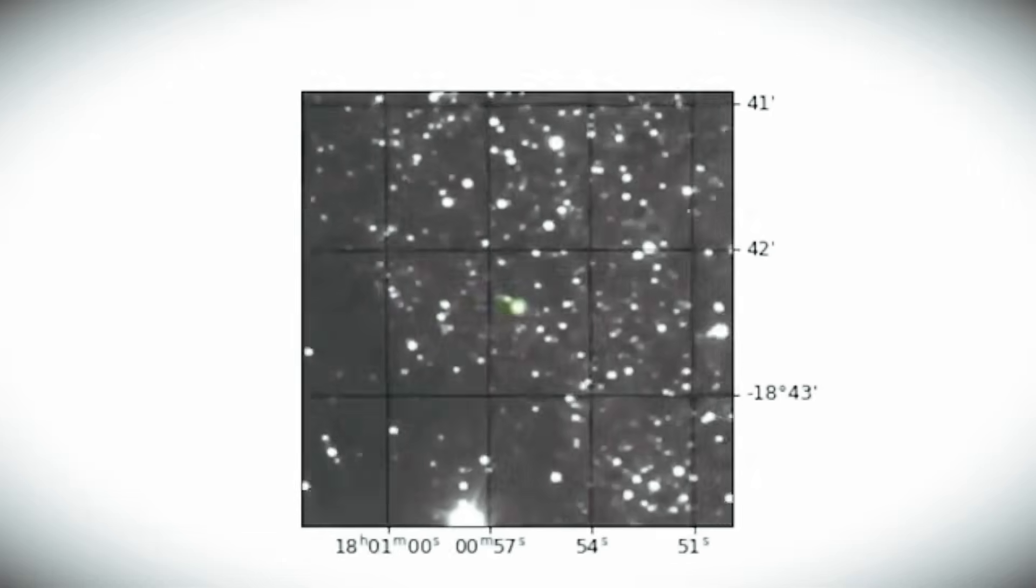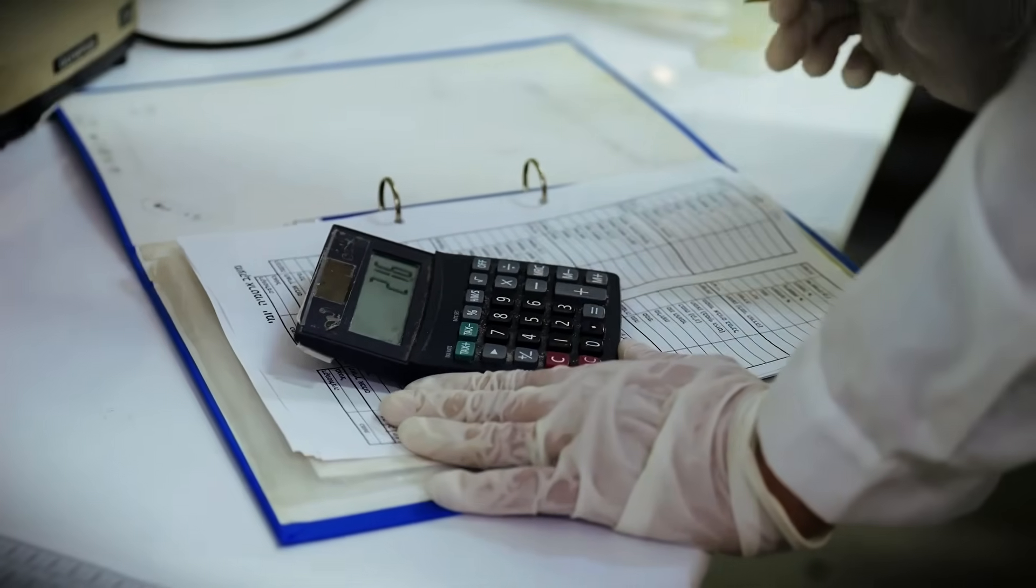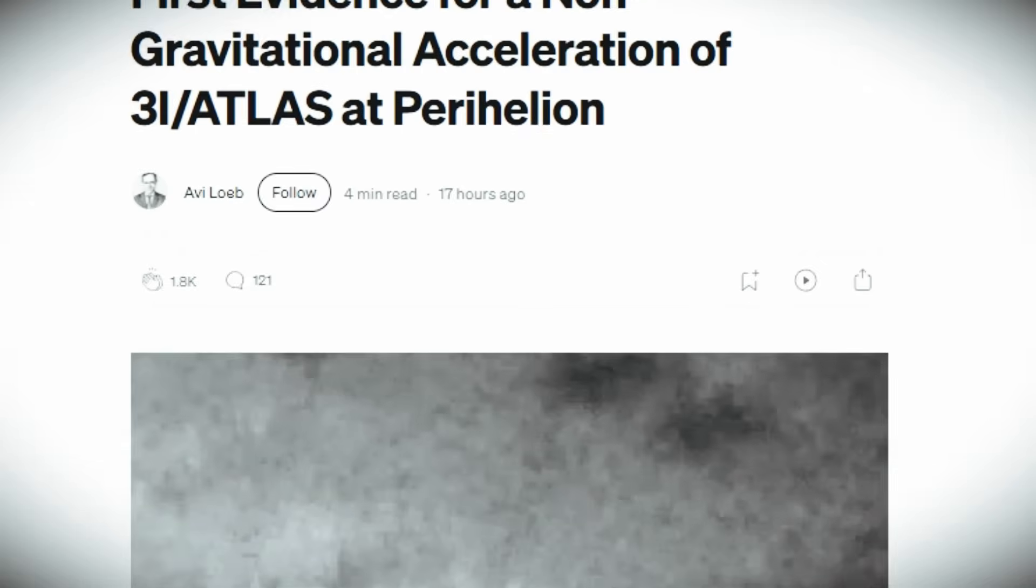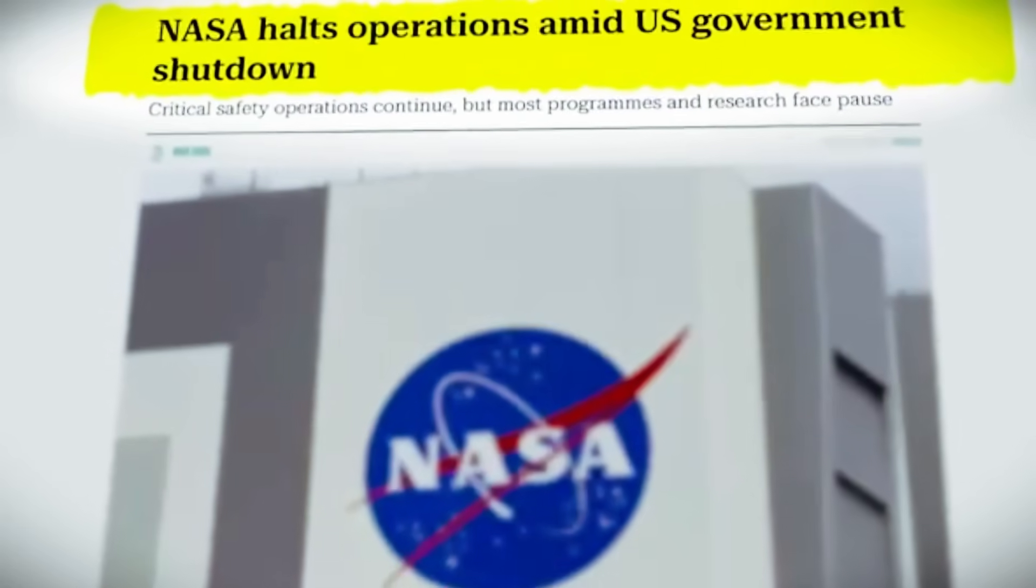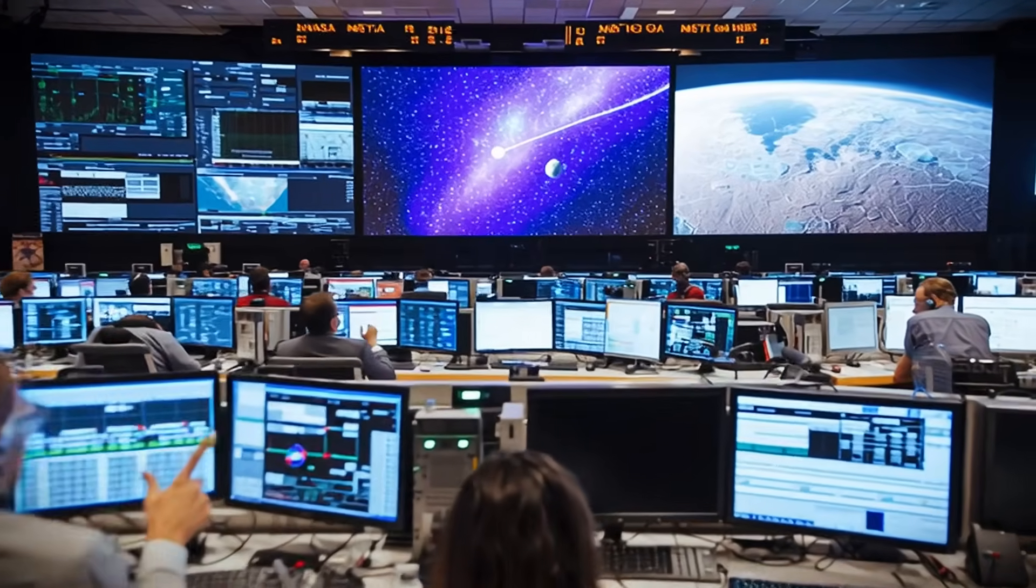2. Anti-tail. Jet directed at the sun. Images captured the formation of an anti-tail, a beam of dust and gas pointing directly at the sun day. This behavior is opposite to what's established by traditional cometary physics, where solar radiation pushes material back.